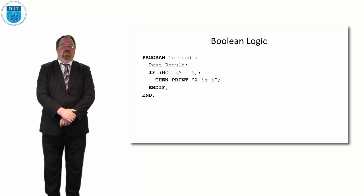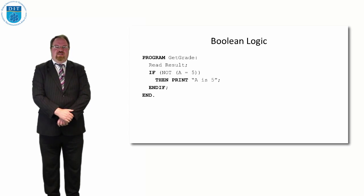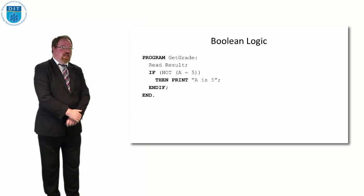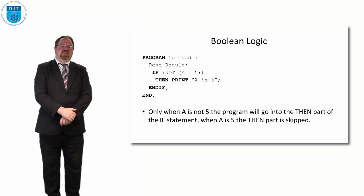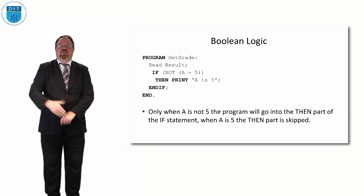So if we were to say, if NOT A equals 5, what that would mean is when A is 3, it would go into the then part. When A is 10, it would go into the then part. So the NOT means do the opposite of that.